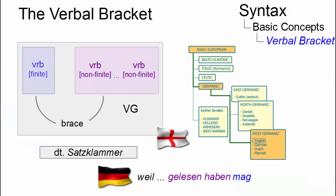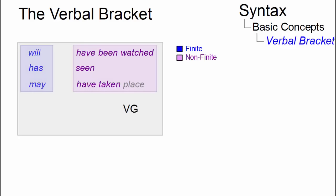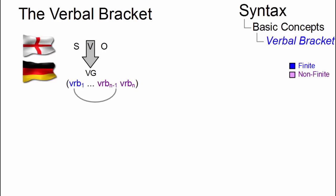The verbal bracket, or brace — in German, Satzklammer — is a typical feature of the Germanic languages. It allows the separation of parts of the verb group and the insertion of all sorts of material in between. In main clauses, this brace construction occurs only in complex verb groups where the finite verb is separated from the non-finite verbal elements. These, together, form an imaginary kind of bracket or brace around other sentence constituents.